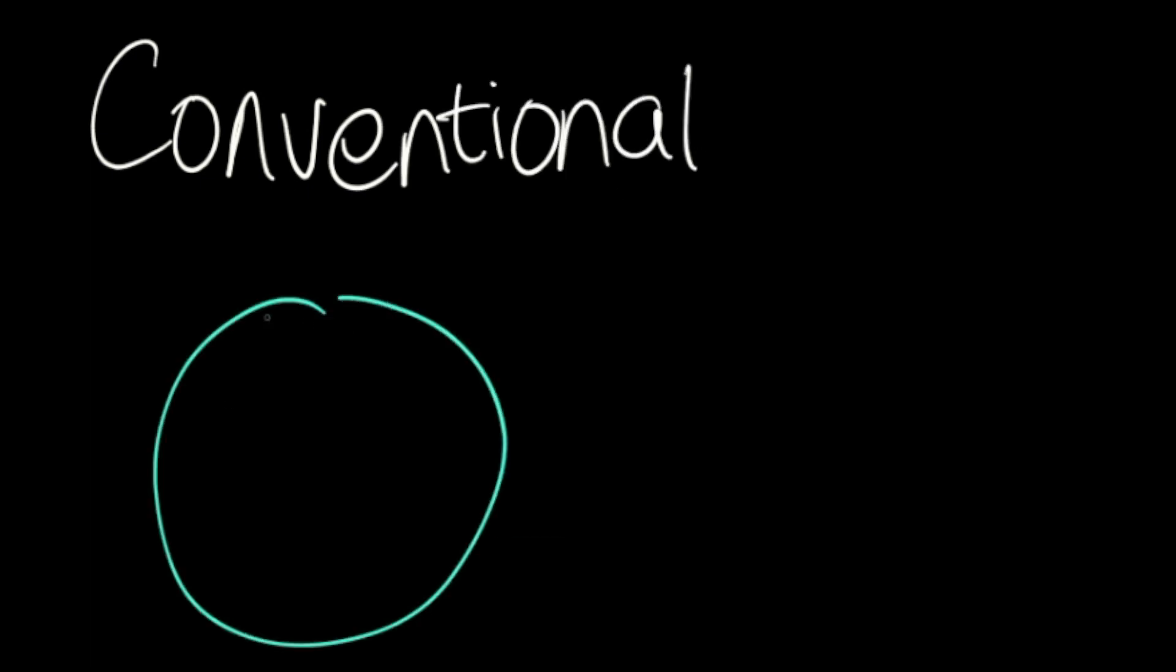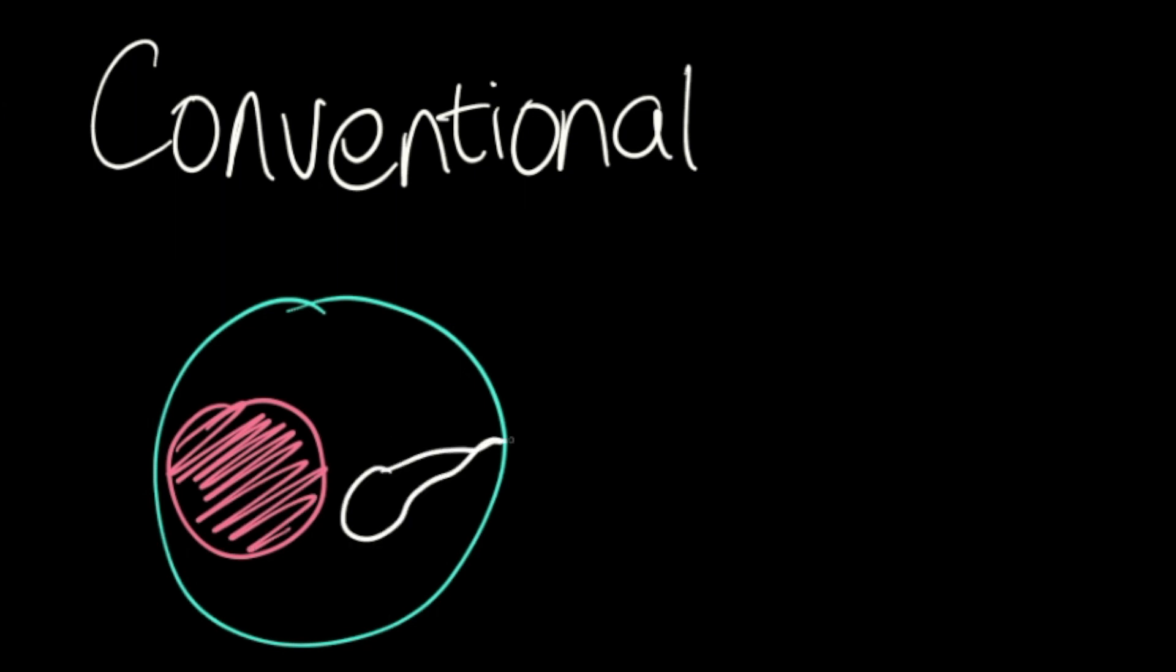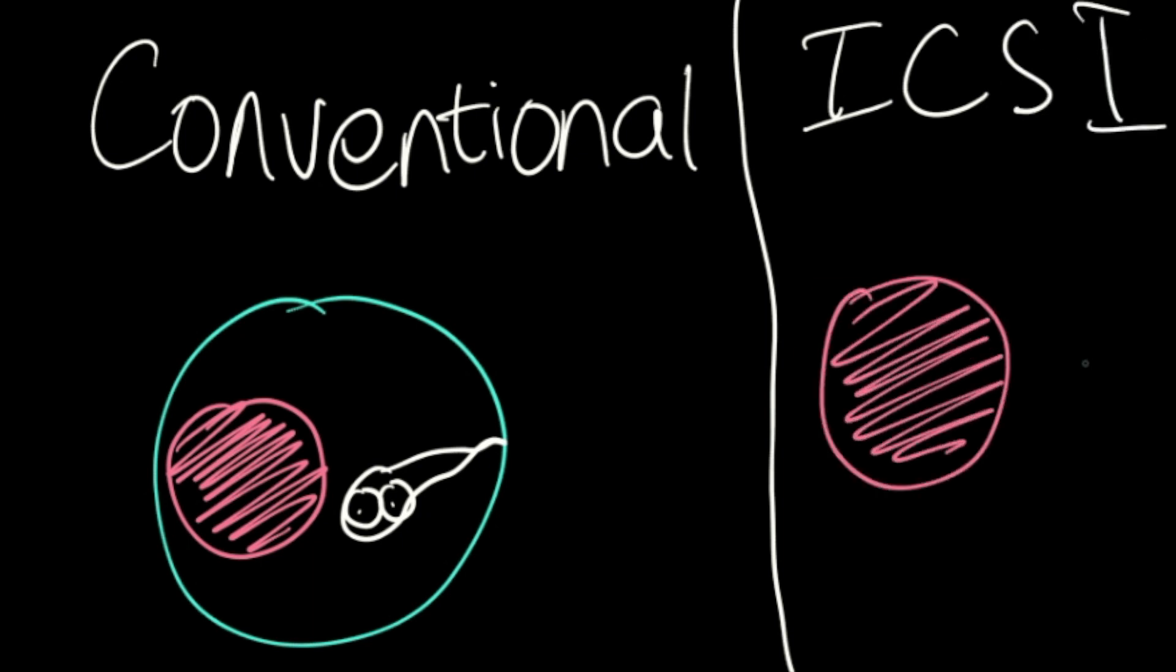IVF or in vitro fertilization uses a combination of medicine and surgical procedures to help the sperm fertilize the egg and implant the fertilized egg in the uterus. There are two types of IVF: conventional IVF, where the egg and sperm are placed in a petri dish, and intracytoplasmic sperm injection or ICSI, where a single sperm cell is injected directly into the cytoplasm of an egg.